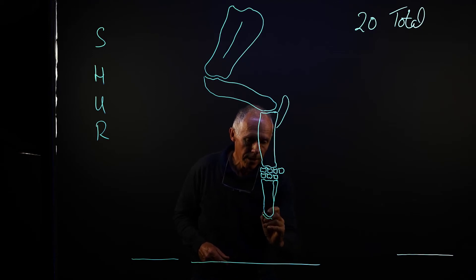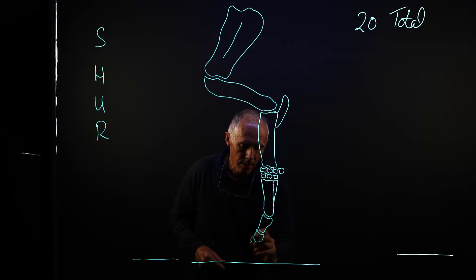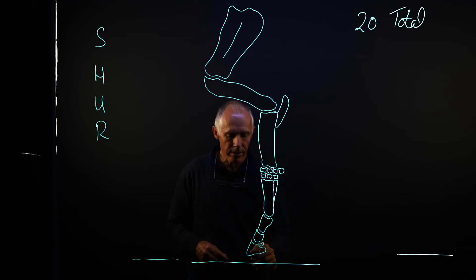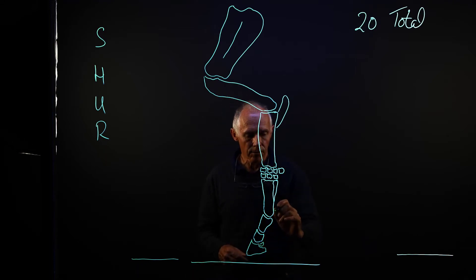Then we have the long pastern, the short pastern, and then the most important bone for farriers of all, the coffin bone. And we want to be careful to draw it in at a slight angle to the floor.